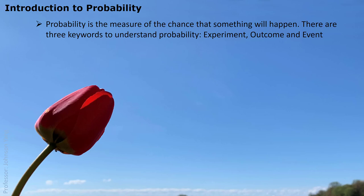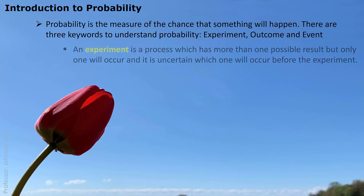The three key words are: Experiment, Outcome, and Event. An experiment is a process which has more than one possible result, but only one will occur, and it is uncertain which one will appear before the experiment.